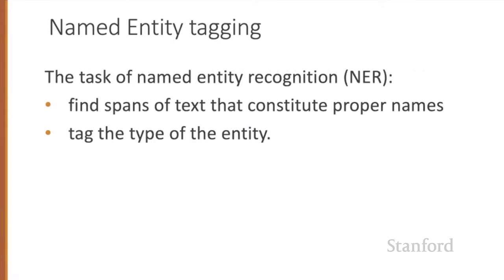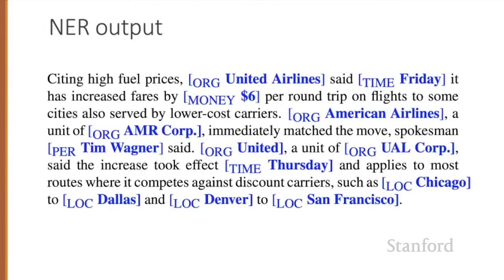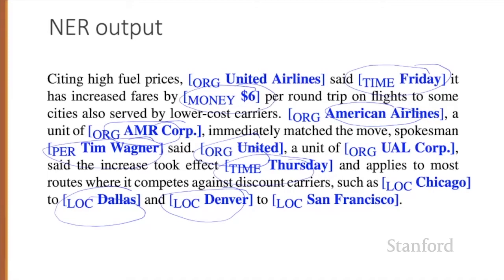The task of named entity recognition is to find spans of text that constitute proper names, and then to tag the type of the entity. Here's a text showing some sample NER output. You'll see 13 mentions of named entities, including five organizations, four locations, two times, one person, and one mention of money.